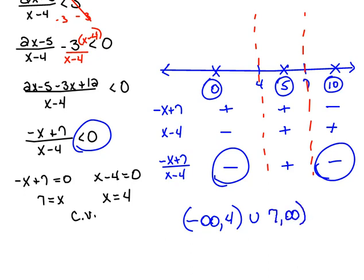And again, infinity gets a parenthesis, and 7 does also because we only have less than. There is no equal here. Now you could graph that on your calculator to confirm it.